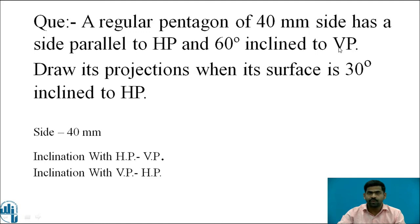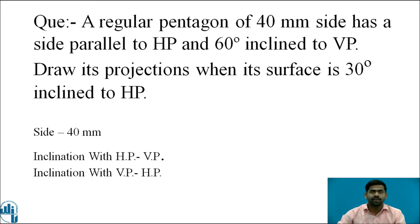When inclination with the VP is given, we consider inclination with the VP in the HP, and inclination with the HP in the VP. Now, can you answer a simple question: is the true shape of the pentagon drawn in the front view or the top view? As per the given condition, the true shape of the pentagon appears in the top view.